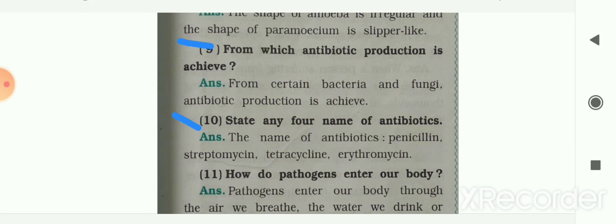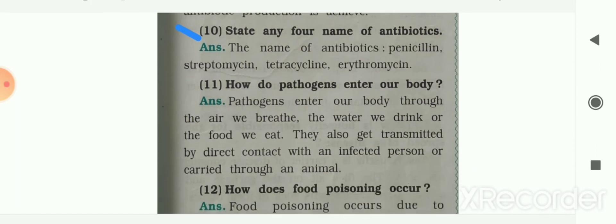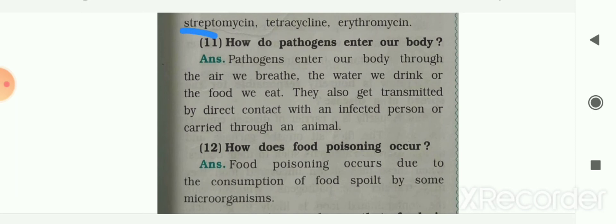Next: state any four names of antibiotics. The antibiotics are penicillin, streptomycin, tetracycline, and erythromycin. Next: how do pathogens enter our body? Pathogens enter our body through the air we breathe, the water we drink, or the food we eat. They also get transmitted by direct contact with an infected person or carried through an animal.